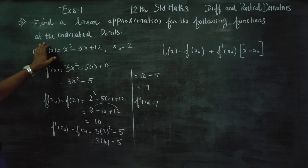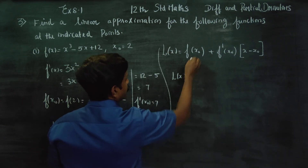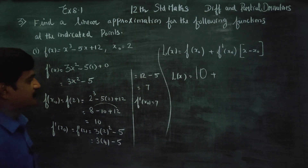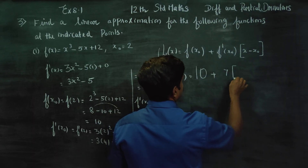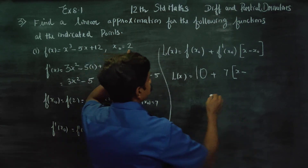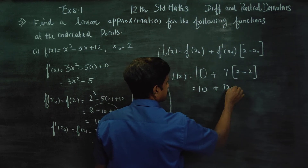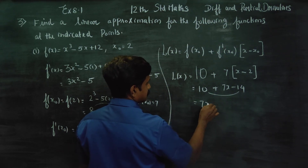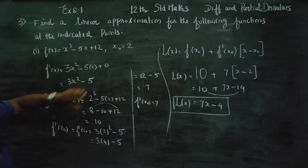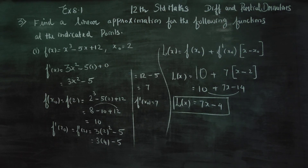Now applying the linear approximation formula at the indicated point x₀ = 2: L(x) = f(x₀) + f'(x₀) · (x - x₀) = 10 + 7(x - 2) = 10 + 7x - 14 = 7x - 4. So the linear approximation is L(x) = 7x - 4. This completes the first sub-question.